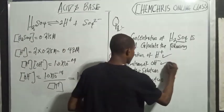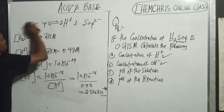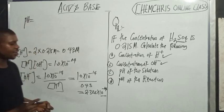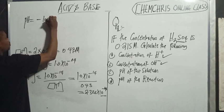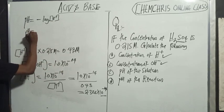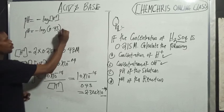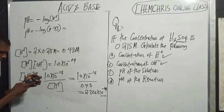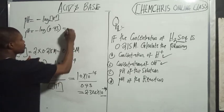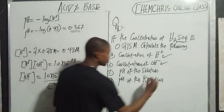The next step is to calculate pH. pH = -log[H⁺]. Since [H⁺] = 0.43, it will be pH = -log(0.43). Using a calculator, that gives pH = 0.367.